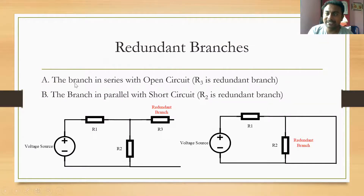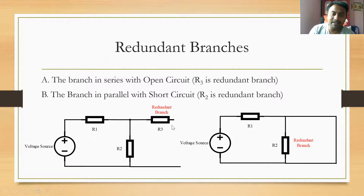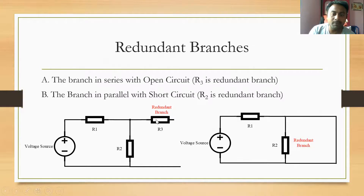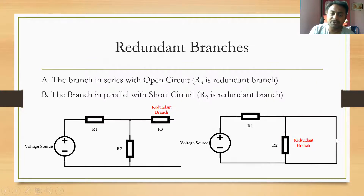A redundant branch is one we do not consider while solving problems. There are two kinds of redundant branches. The first kind is a branch in series with an open circuit — in this network, R3 is in series with the open circuit, so no current flows through R3 and we remove it. The second kind is a branch parallel with a short circuit — R2 is parallel to the short circuit.